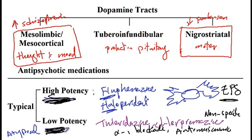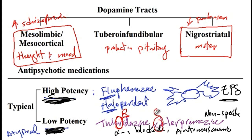These nonspecific side effects are more commonly seen with thioridazine and chlorpromazine. In addition, these medications are associated with decreased vision. For thioridazine, this is due to deposits in the retina, while chlorpromazine is associated with deposits in the cornea.